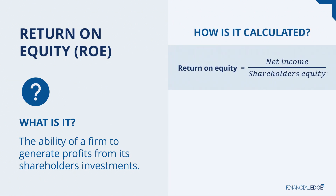How is it calculated? Well, you take your net income — that's the return that's available to be paid out to shareholders — and you divide it by the shareholders' equity, which we have to think about as the amount that shareholders invested.